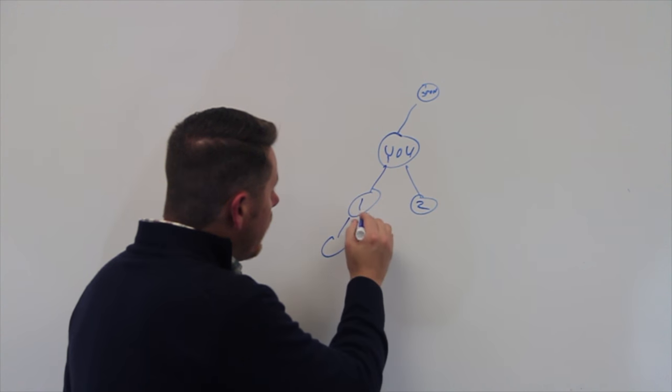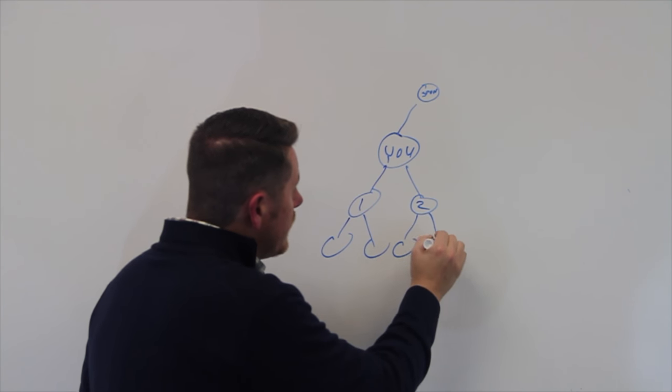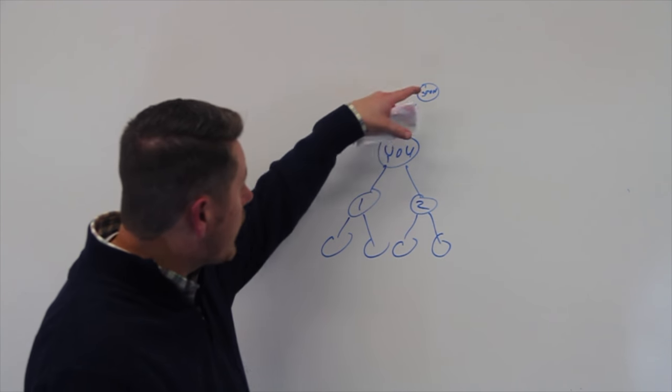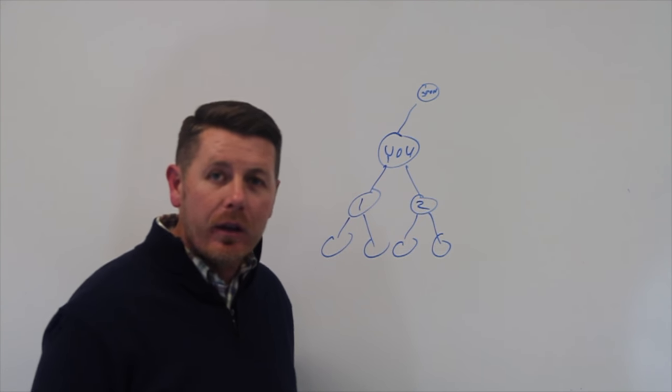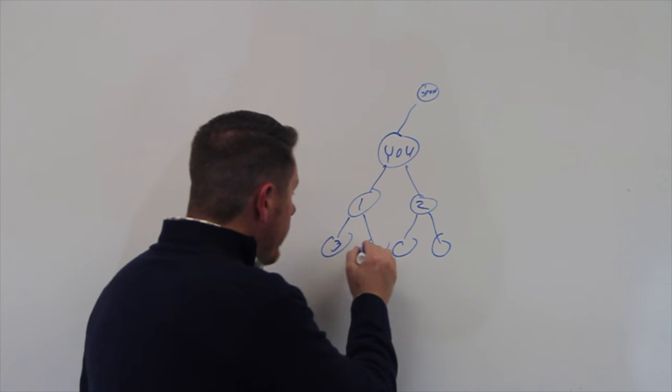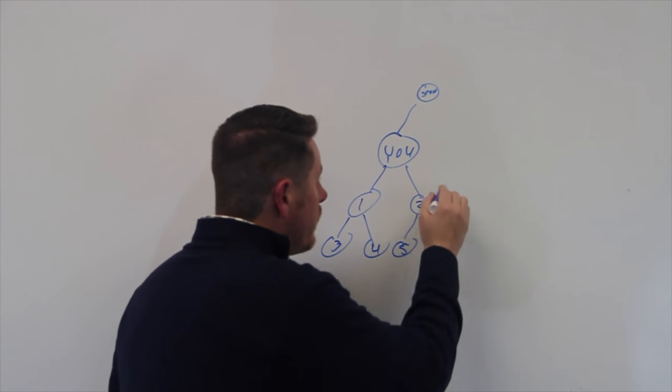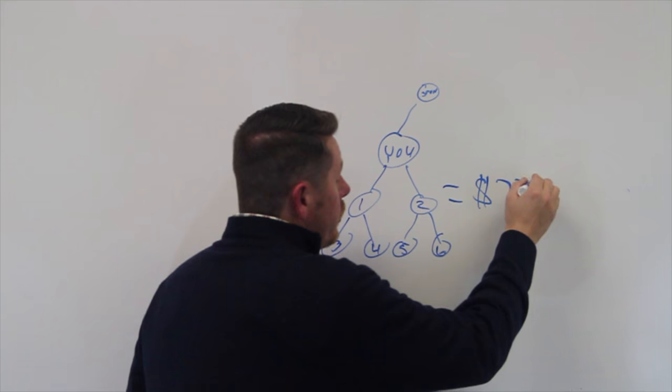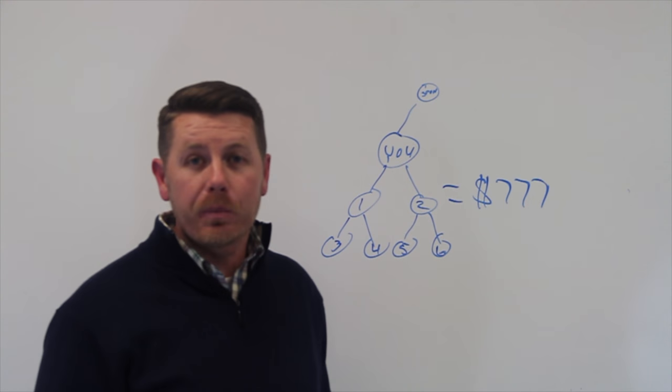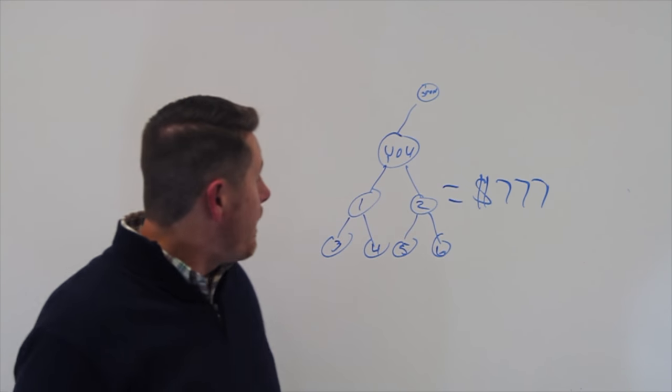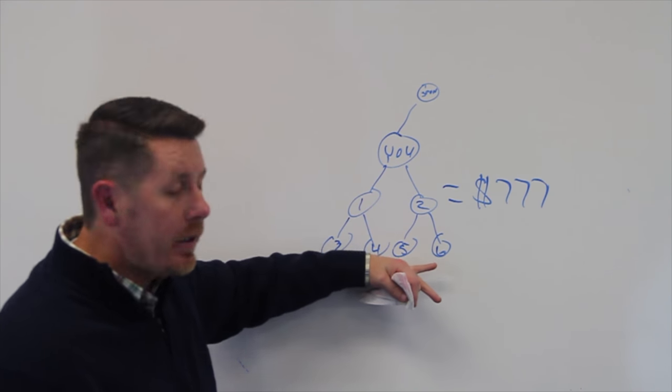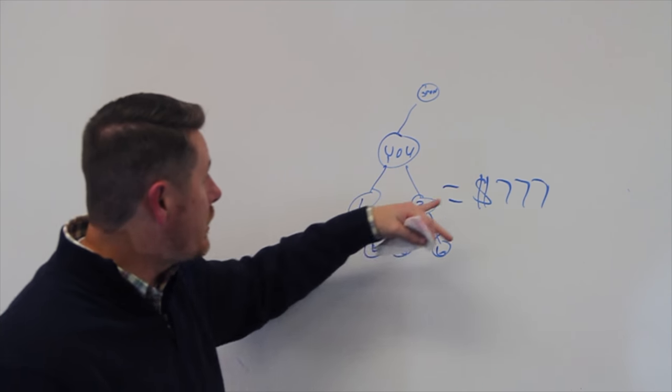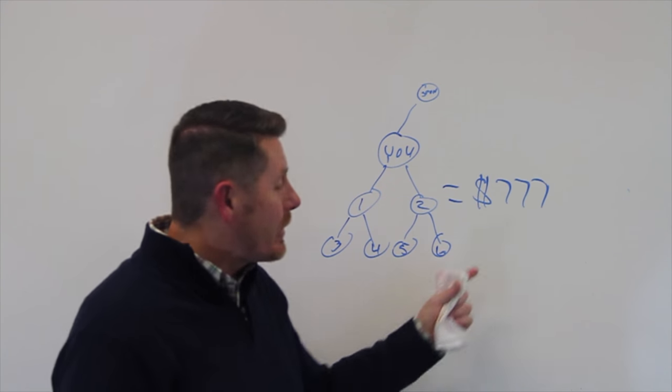If number one and number two did the same thing, even though they came from your sponsor, if number one and number two went out there and made two sales, guess what? You're going to cycle. Your sponsor may not even cycle, but you cycled. He or she helped you by putting these two people on your second line. All you had to do is fill up the bottom four. And what happens? You earn $777. You cycle back.